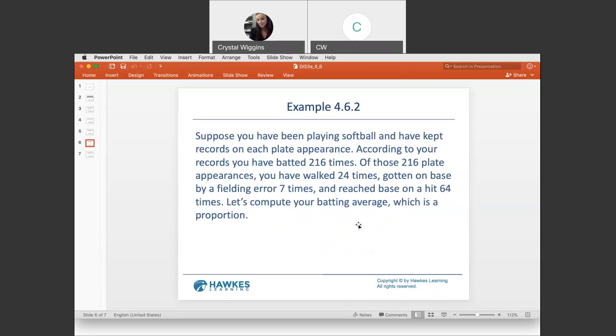Suppose you have been playing softball and have kept records on each plate appearance. According to your records, you have batted 216 times. And of those 216, you have walked 24 times, gotten on the base by a fielding error 7 times, and reached base on a hit 64 times. Let's compute your batting average, which is a proportion.